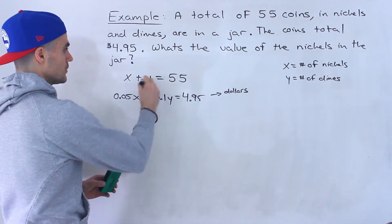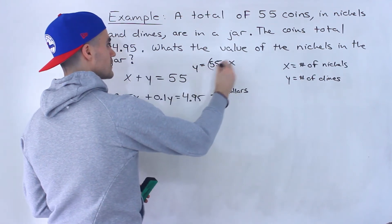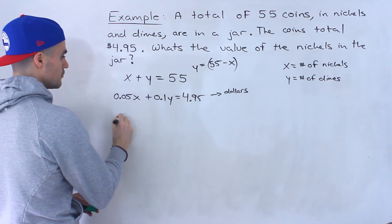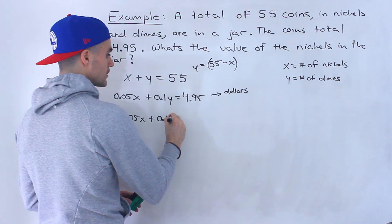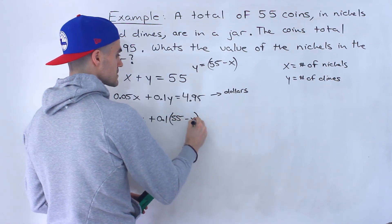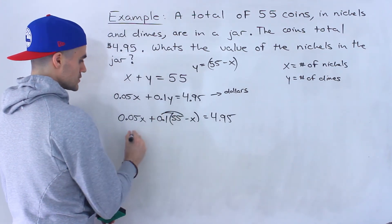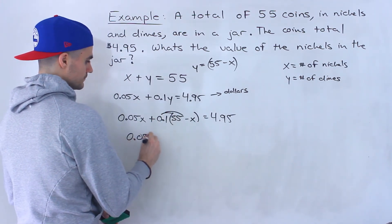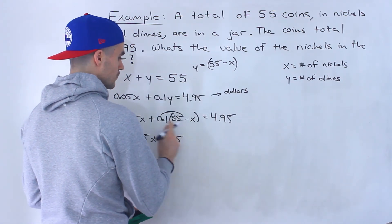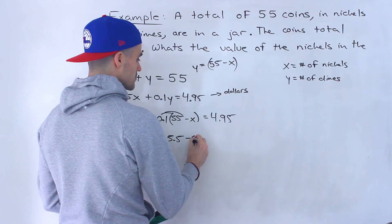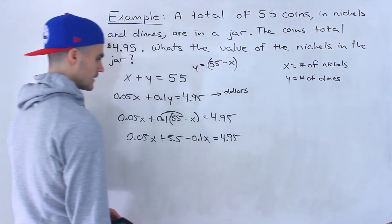So to solve here, what I'm going to do is isolate for the y. So y would be 55 minus x. And I'll take this and I'll plug it in for this y. So I'll have 0.05x plus 0.1, and then for the y, I'm going to plug in 55 minus x equals 4.95. Then we're going to solve for x. We can distribute. 0.1 times 55 gives us 5.5. 0.1 times negative x gives us minus 0.1x equals 4.95.